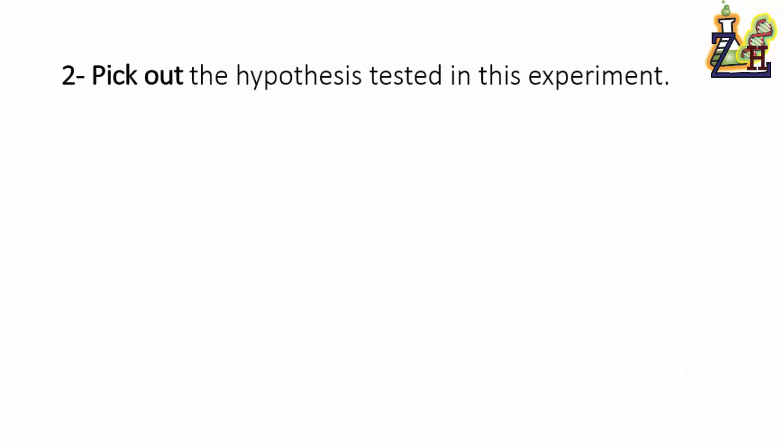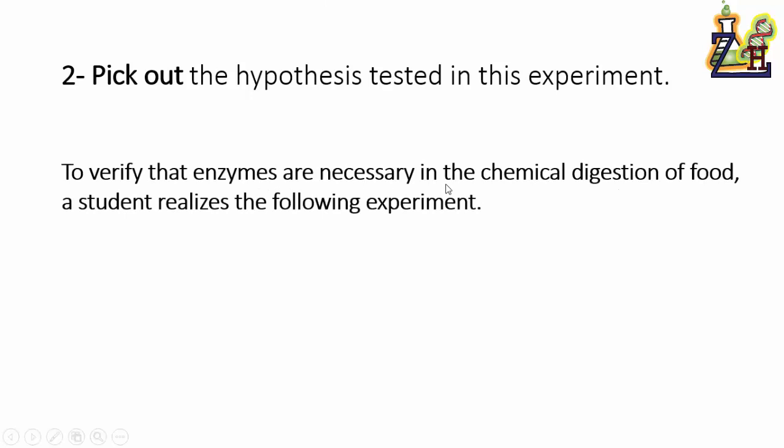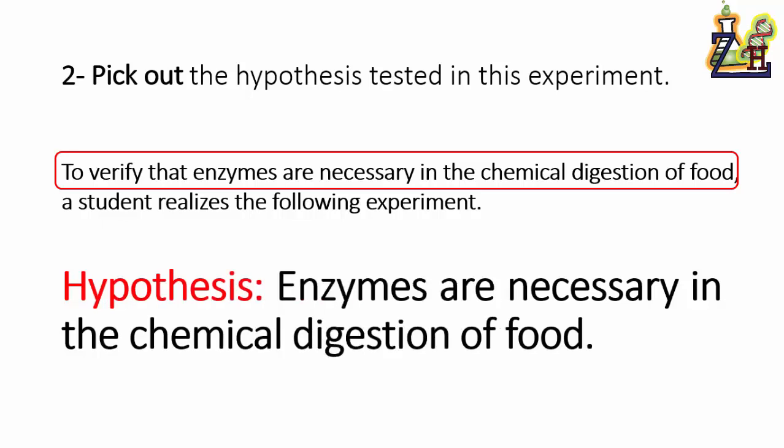Second part: Pick out the hypothesis tested in this experiment. They're giving it to us but we have to identify it. They might not give us the hypothesis in the proper format. We noticed they didn't give us a hypothesis directly. What is the hypothesis here? It's the objective. The objective is to verify that enzymes are necessary in the chemical digestion of food. So the hypothesis is enzymes are necessary in the chemical digestion of food.